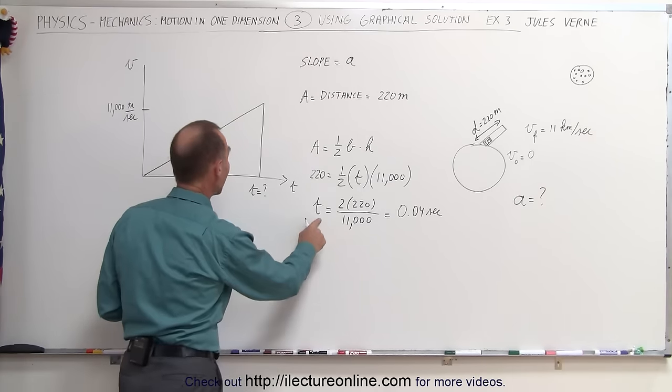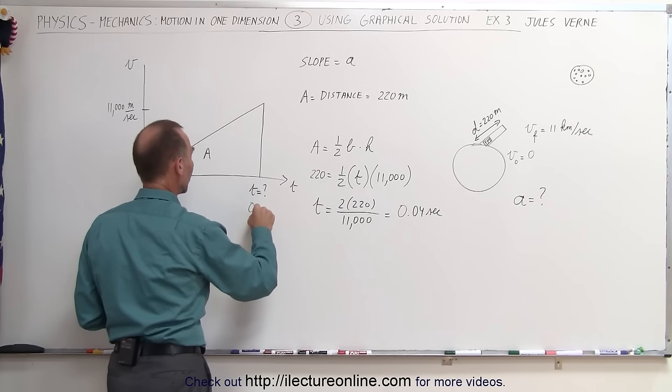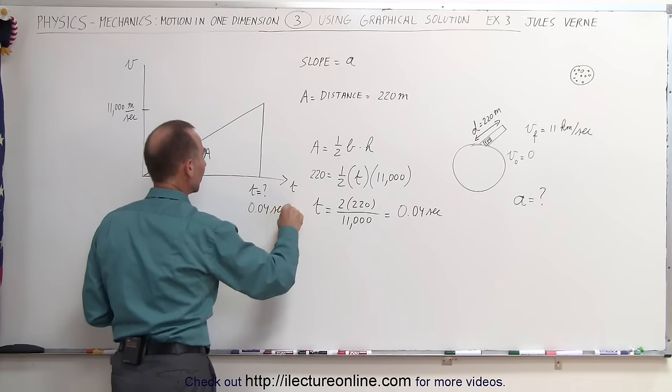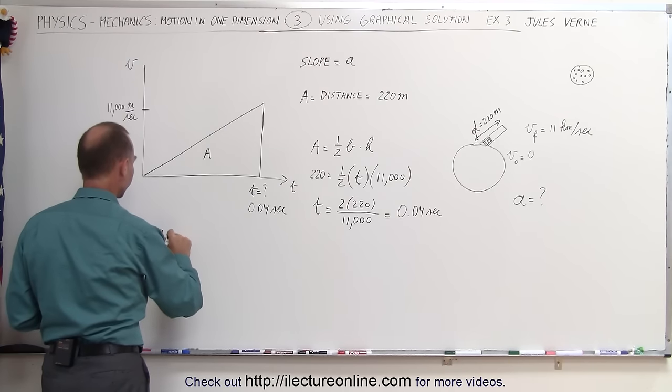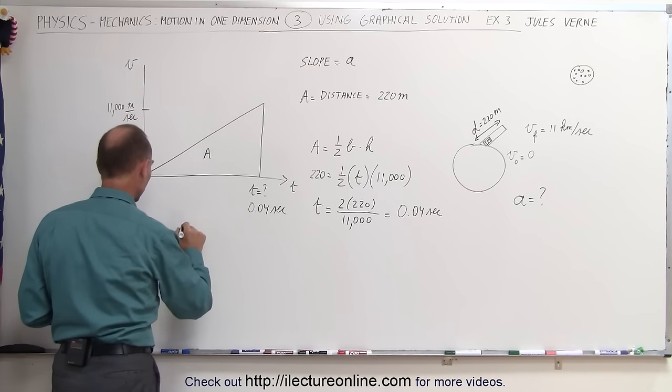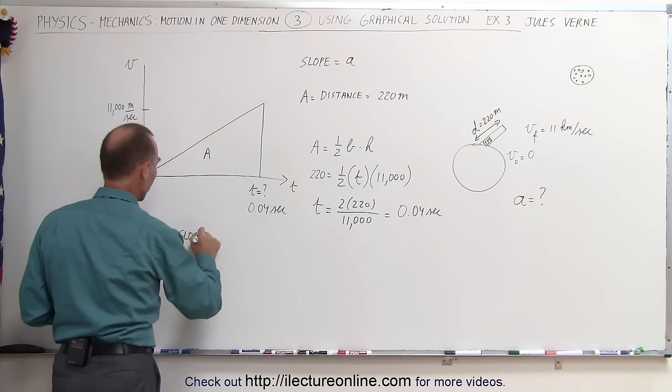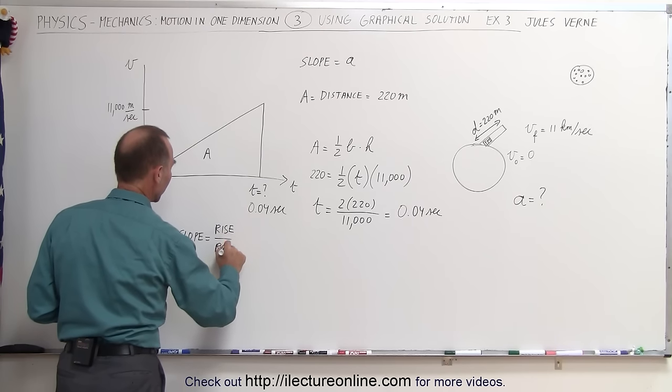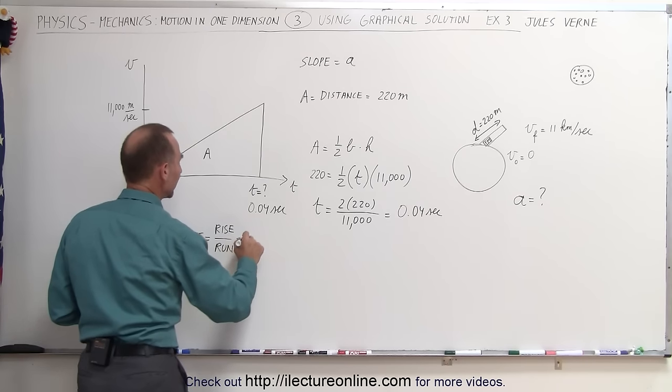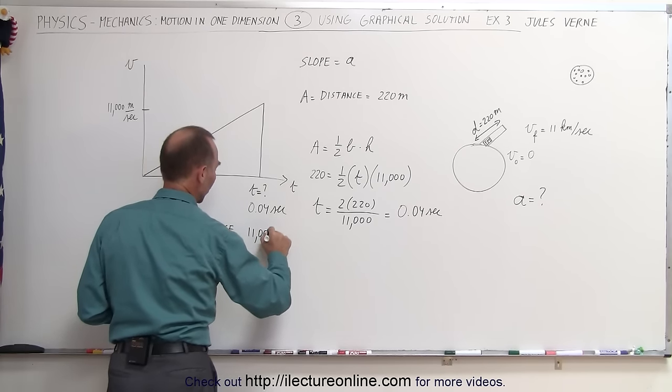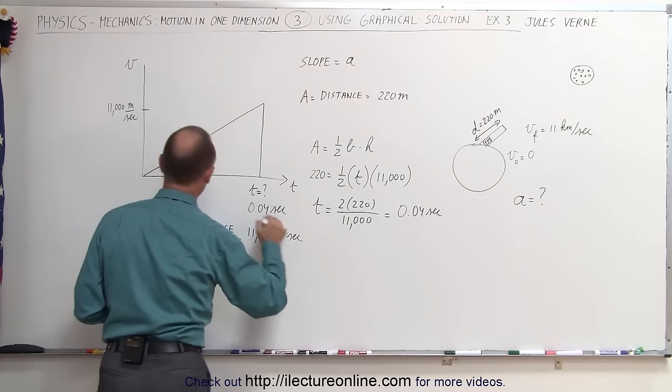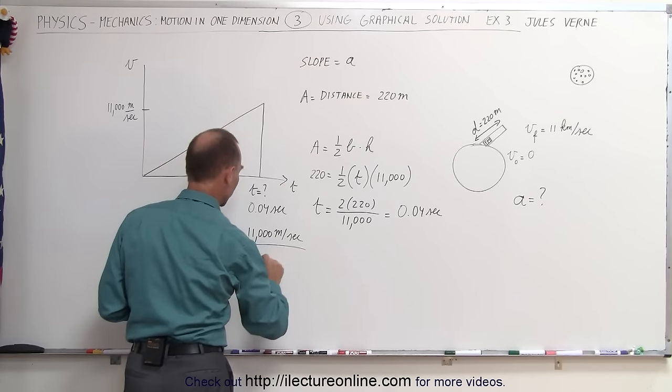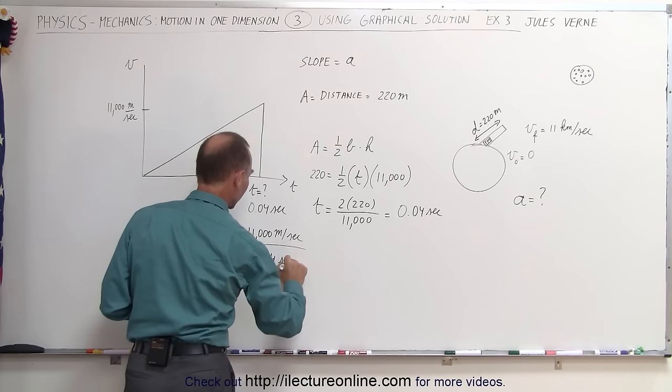Now that we have the time of 0.04 seconds, to find the acceleration, we use the slope. The slope equals rise over run. The rise is 11,000 meters per second, and the run is 0.04 seconds.